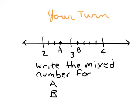Alright, it's your turn. Go ahead and copy this bottom portion down where you're writing a mixed number for point A and point B. Write that mixed number for point A and for point B. Go ahead and hit pause.